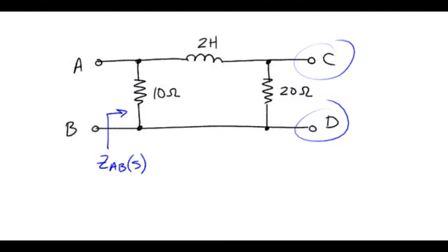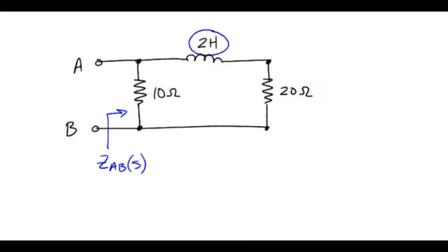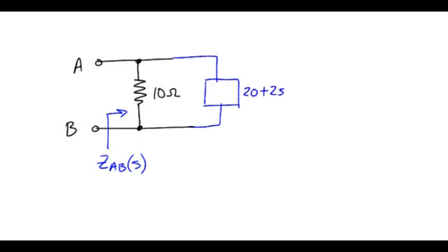We should also note that the impedance of the inductor is L times S, so that's 2S. We have a series combination, which would be 20 plus 2S. And now we have the parallel combination of 10 ohms with that series combination, 20 plus 2S.